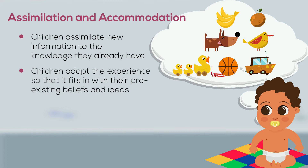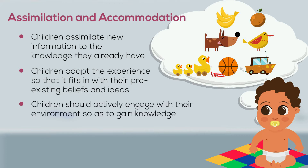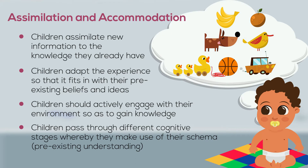According to Piaget, children should actively engage with their environment so as to gain knowledge of the world. In order to do this, they pass through different cognitive stages whereby they make use of their schema — their pre-existing understanding. These schemas are useful because they allow children to make sense of the world around them.